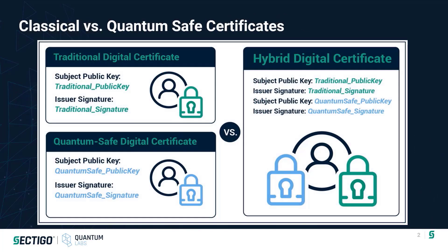When we talk about QuantumSafe certificates, we're still talking about traditional X.509 digital certificates. There are a couple of different flavors of certificates to touch on briefly. Traditional digital certificates use one of the traditional public key/private key encryption algorithms — in other words, RSA encryption or ECC encryption. Within the certificate, we have the public key as well as the signature generated with that traditional algorithm, either ECC or RSA.